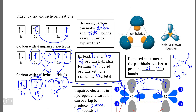In the next video, we're going to take a look at how hybridization can be used to explain expanded valence shells and how hybridization can allow elements to form more than four single bonds.